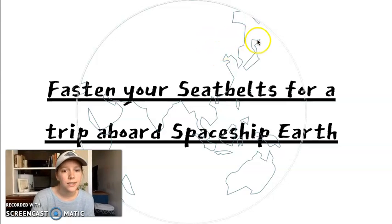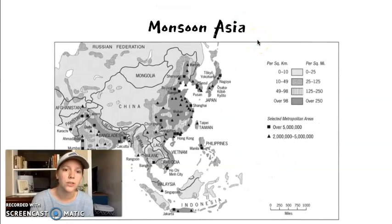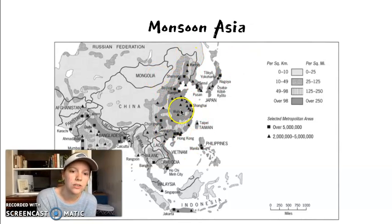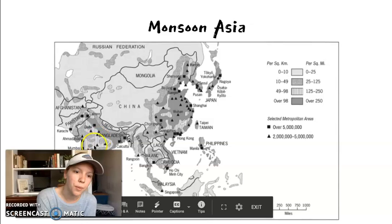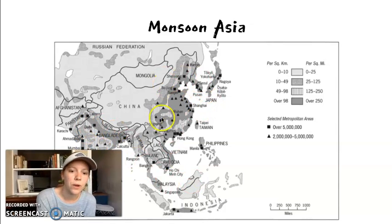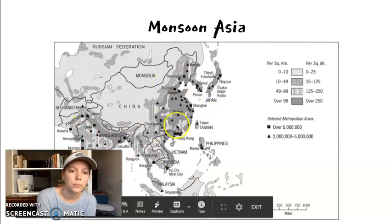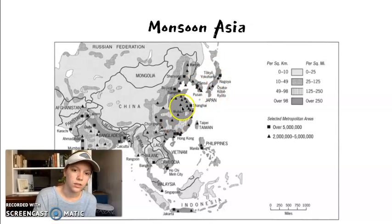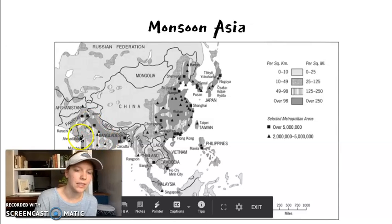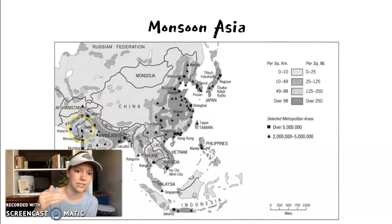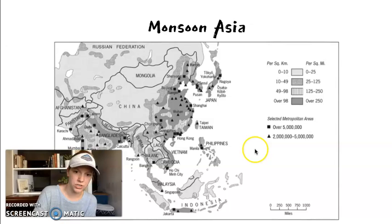Getting back to our slides — here are some quick other things that unify this region. Here's the book's map of Monsoon Asia. You can see there are lots of mountains and similar topography throughout. That's why we study this region so specifically: Japan, Korea, China, Southeast Asia, India. We won't really be looking at Pakistan because it's kind of a periphery region, and the book talks about that as well.